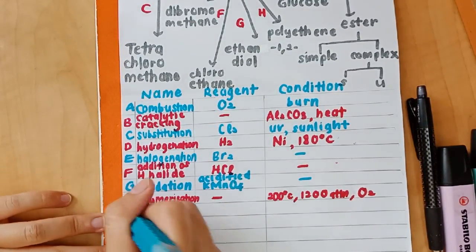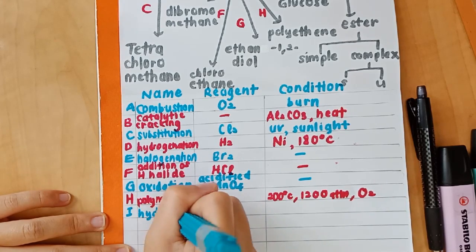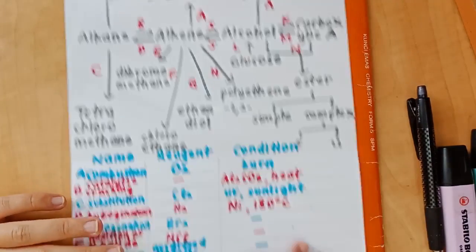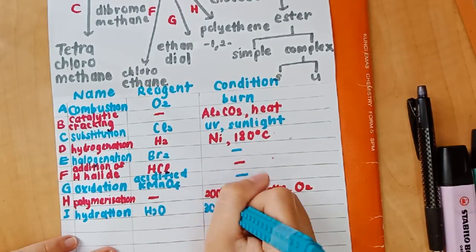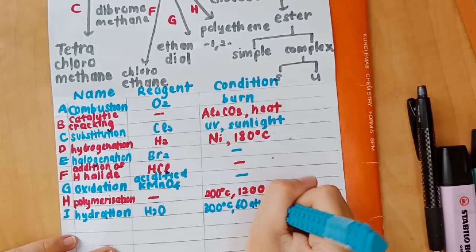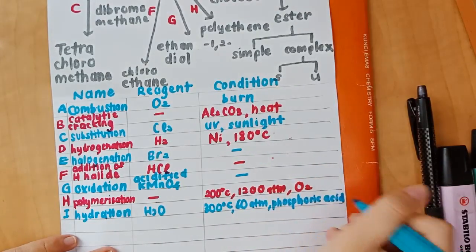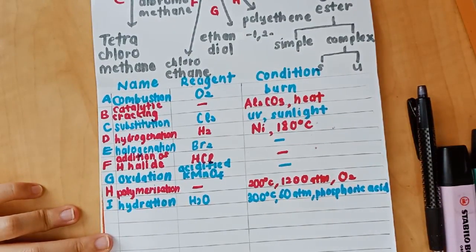I is from alkene to alcohol. Alkene has to undergo hydration. And when it's hydration, the reagent is always H2O. The conditions are 300 degrees Celsius, 60 atm, and phosphoric acid.